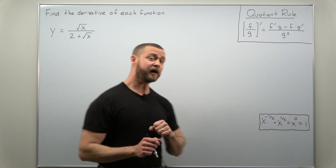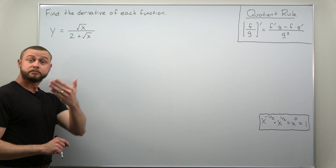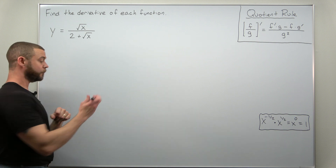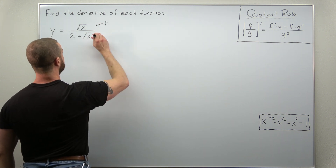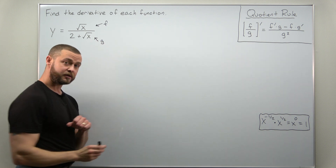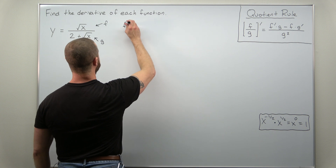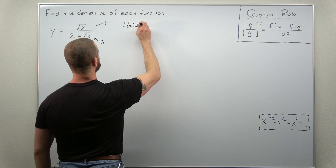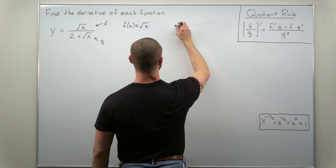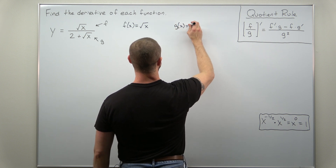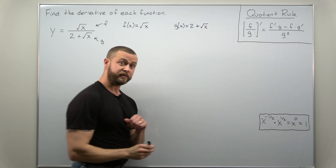Let's look at our function here — it's written as a fraction or quotient, so we're going to apply the quotient rule. We'll identify the numerator as f and the denominator as g. So f(x) is square root of x, and g(x), the denominator, is 2 plus square root of x.